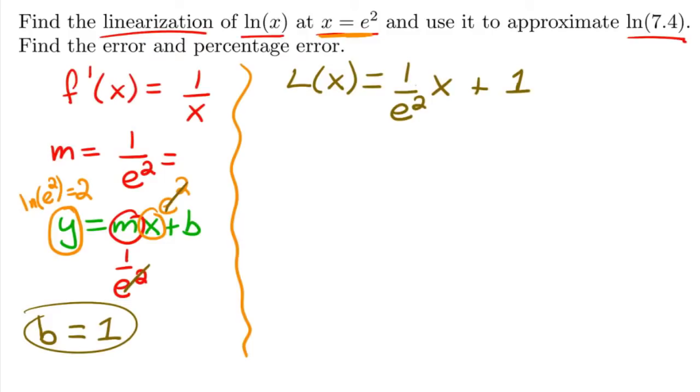My approximation for ln(7.4) is approximately equal to plugging in 7.4 inside of my linearization.